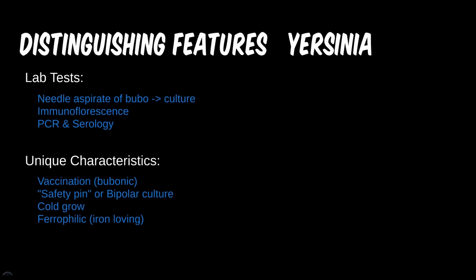Y. pestis can be described as safety pin or bipolar when seen through the microscope. It also likes to grow in the cold, which is in opposition to Campylobacter. Oddly, due to this bug's love of iron, those with hemochromatosis are more susceptible to infections.